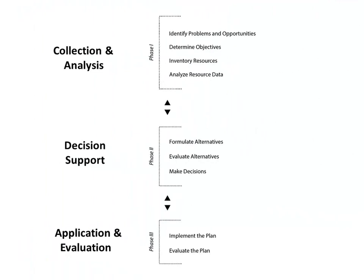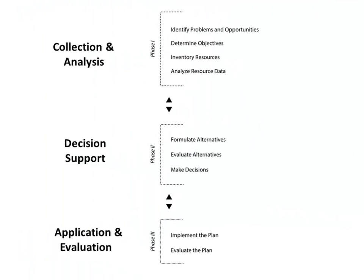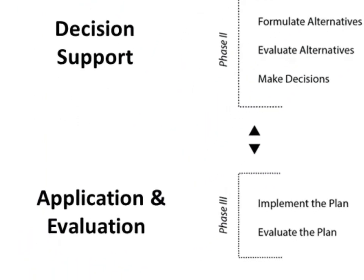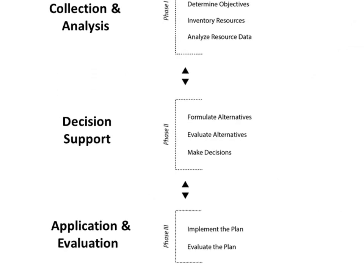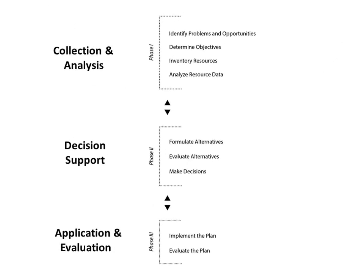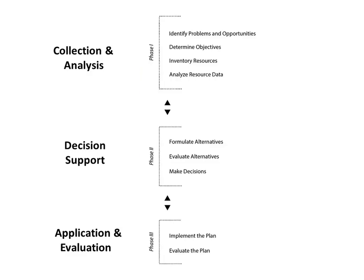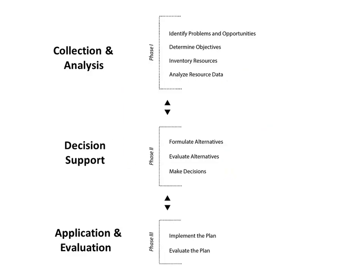But where is Phase 3, Application and Evaluation? This phase and its steps are not documented on the NRCS CPA 52 because they are future actions that have yet to occur. Remember, the NRCS CPA 52 is used to document the outcomes of the planning process. Several iterations through the steps in Phases 1 and 2 may occur before final outcomes are documented on the NRCS CPA 52.